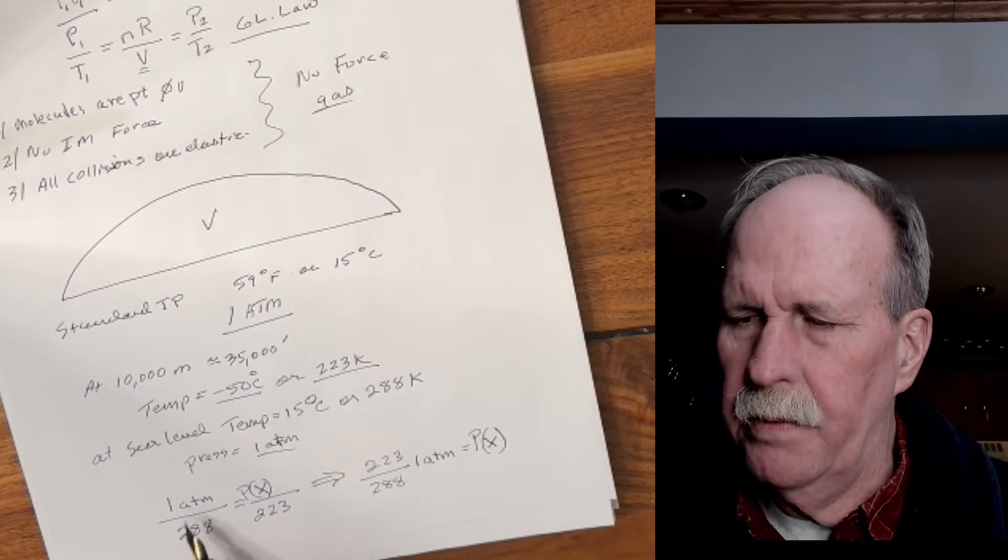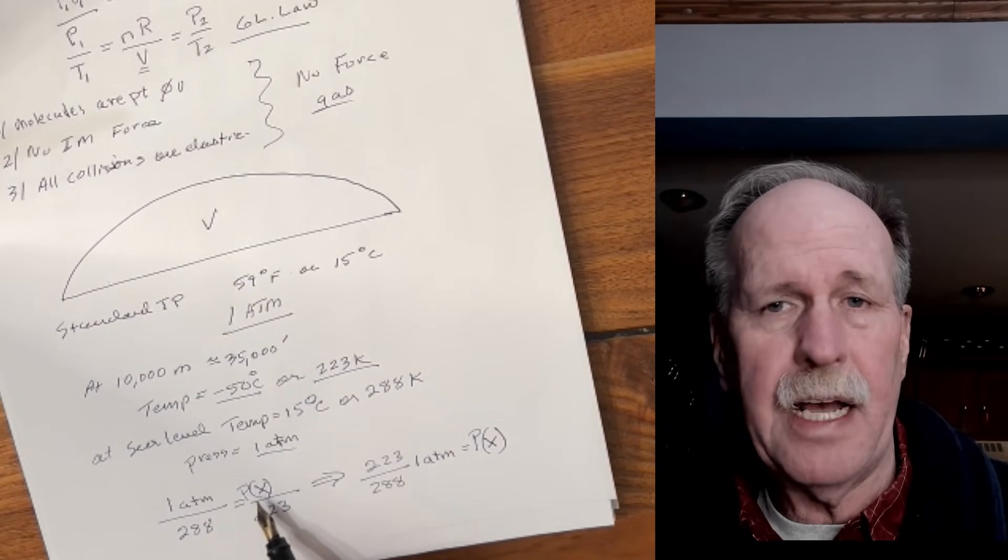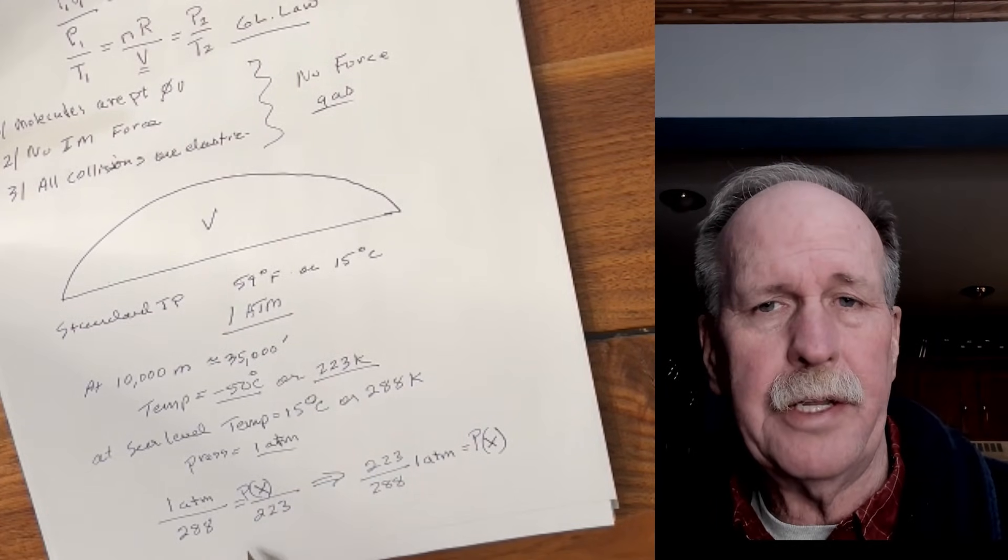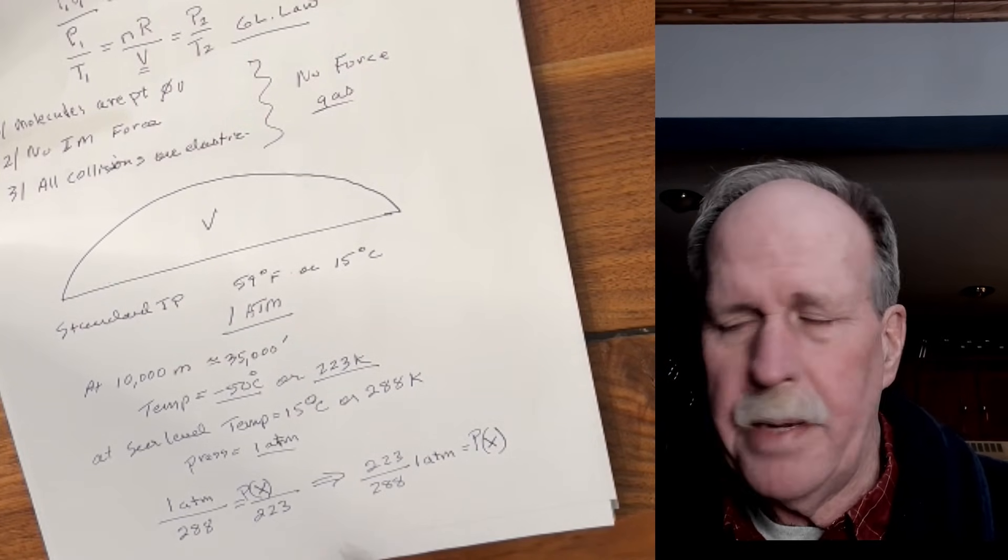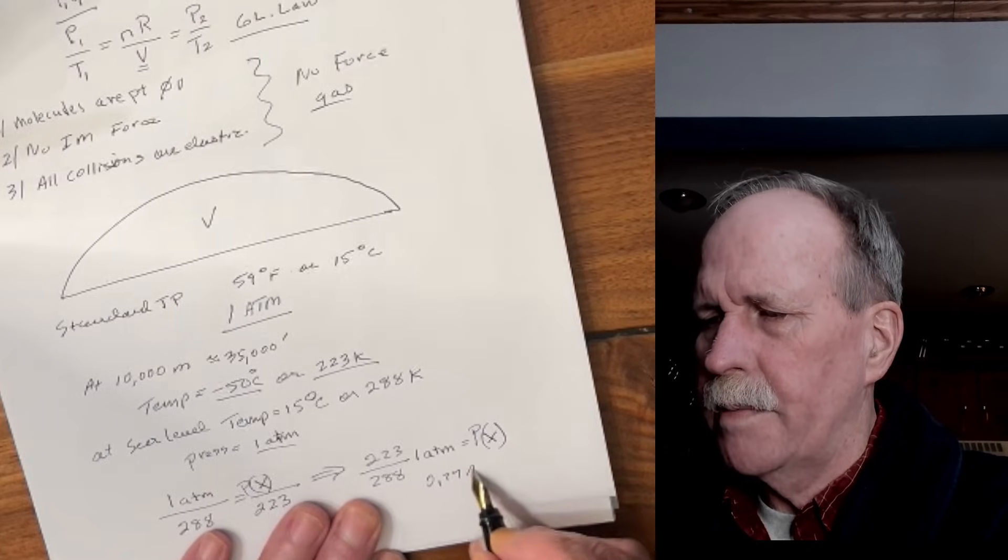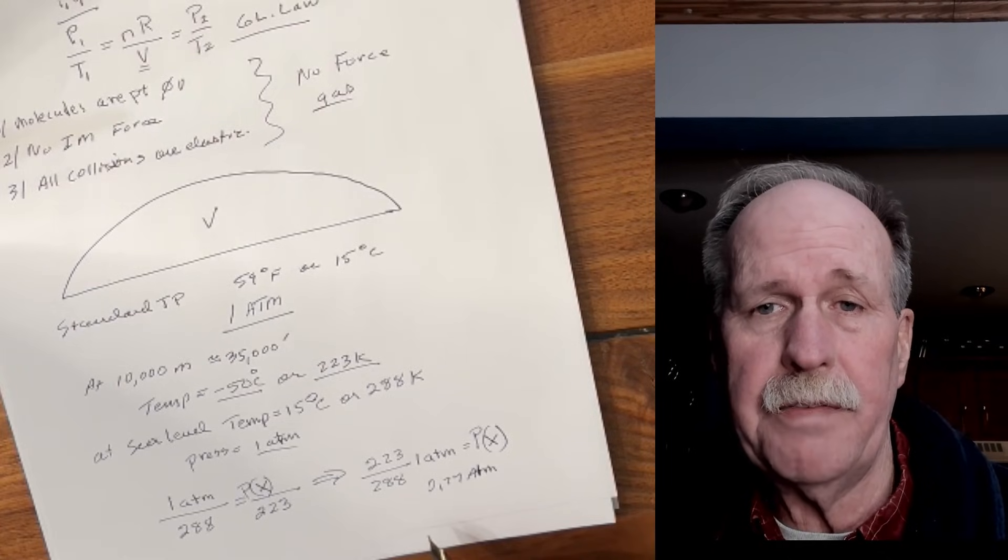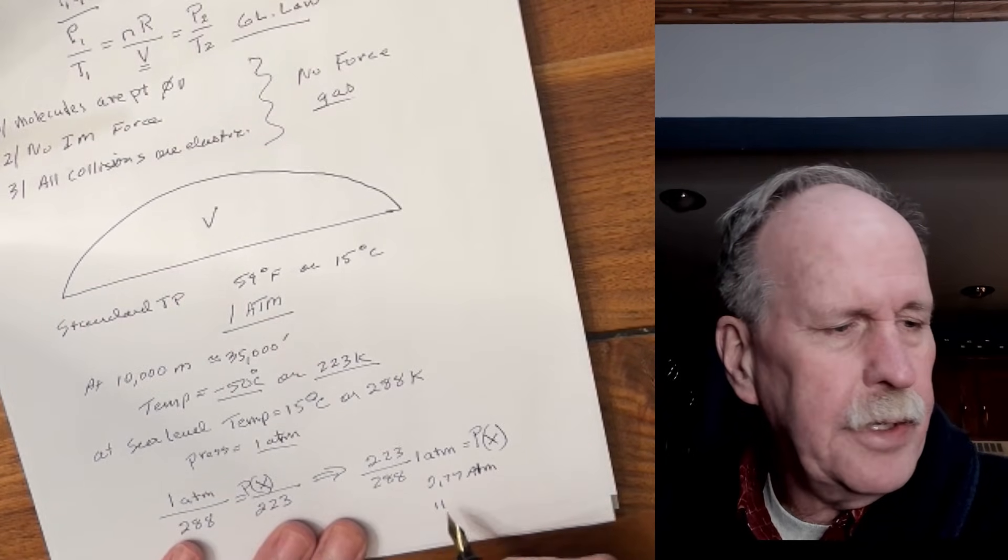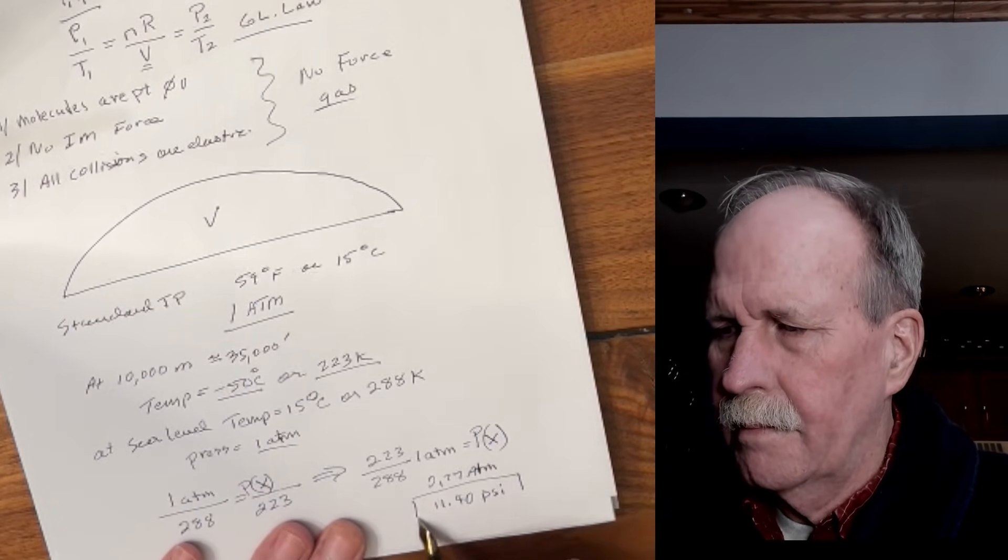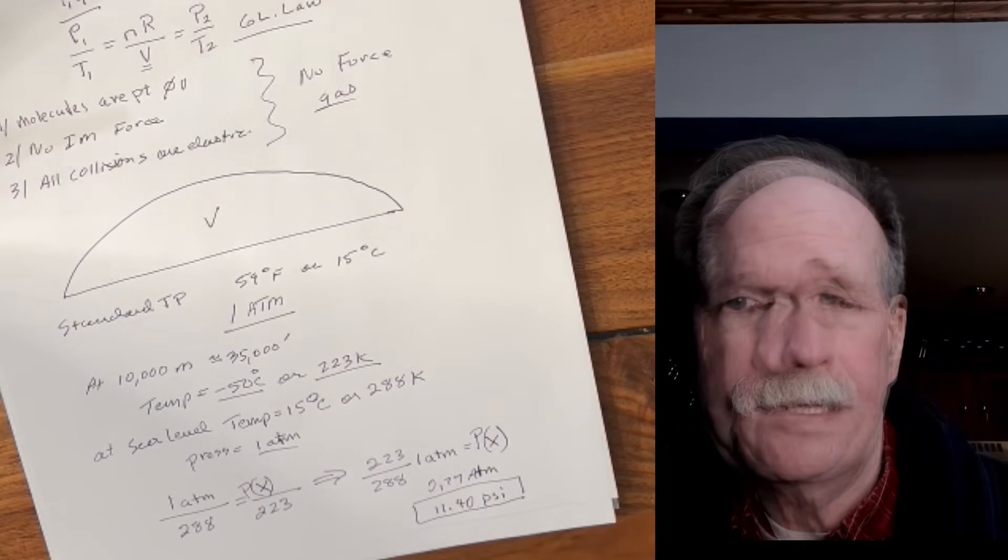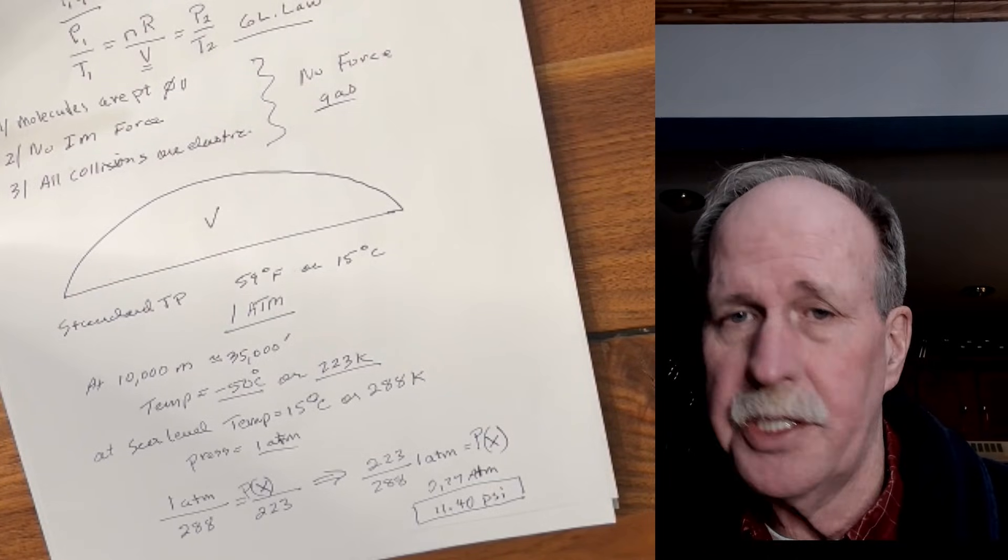So here we've set up the problem. We've got one atmosphere at 288 Kelvin equals the pressure at 10,000 meters over 223 Kelvin. We just rearrange a little bit, and we get a final pressure. Now you can check my math, but this is about 0.77 atmospheres. Now given sea level pressure is about 14.7 pounds per square inch, that means that we're on the order of 11.4 PSI. That's a pretty high pressure. So why, when we measure the pressure at altitude, do we get a reading of about 3.5 PSI? Considerably less.